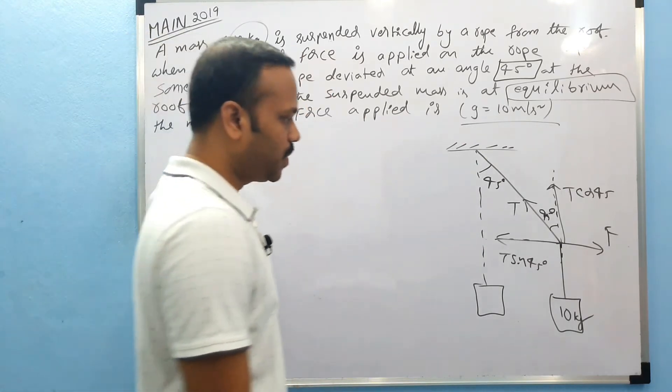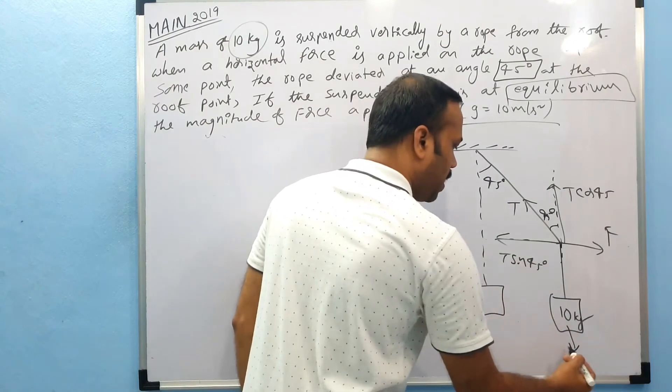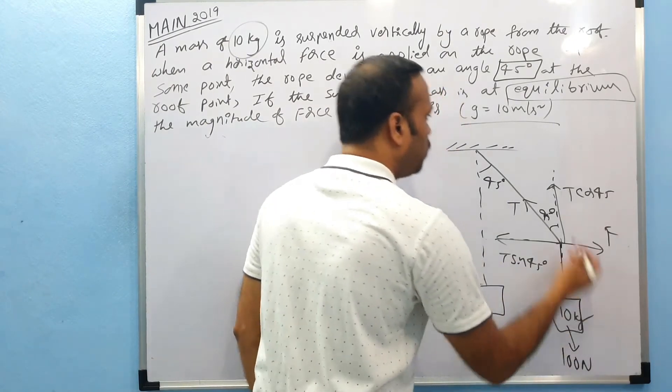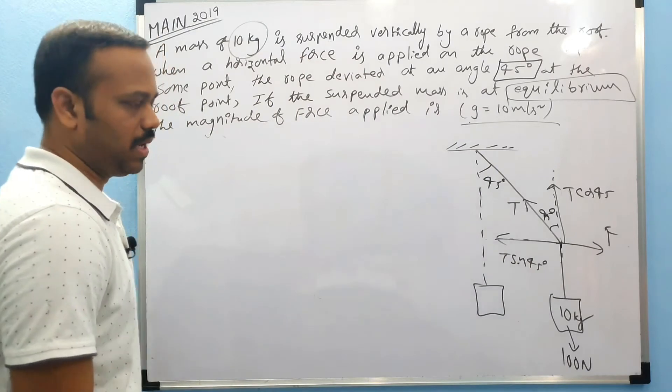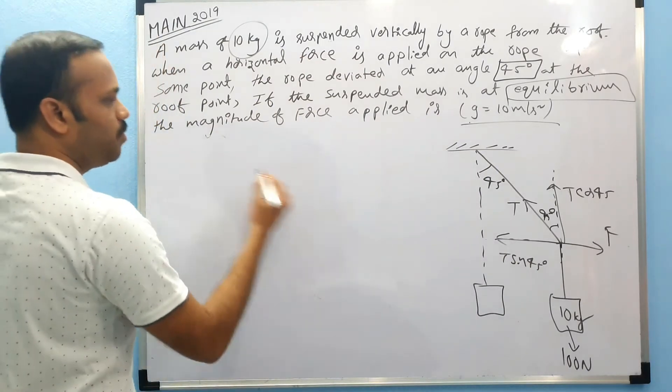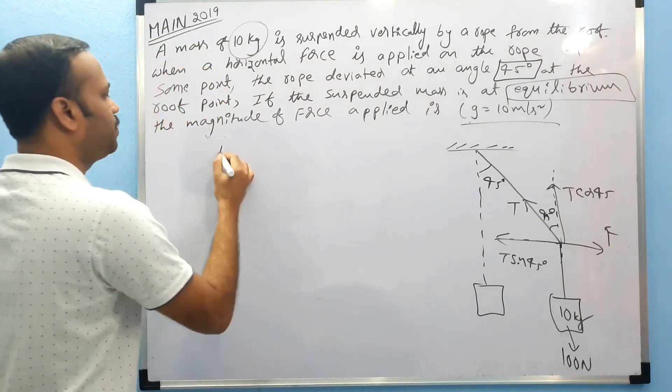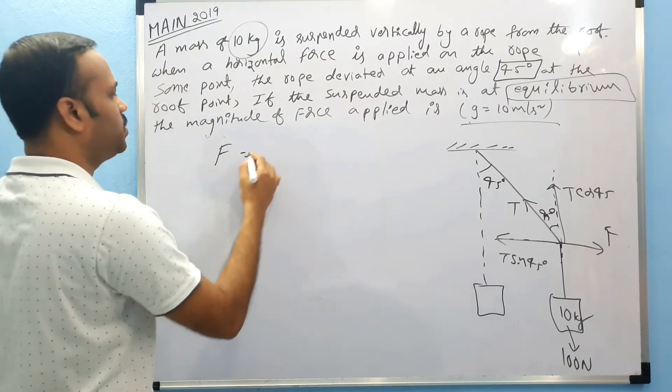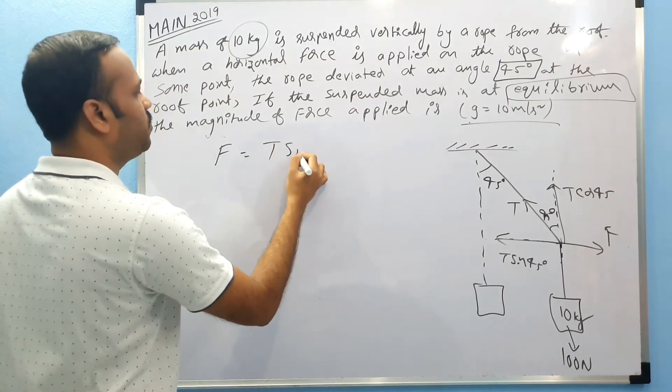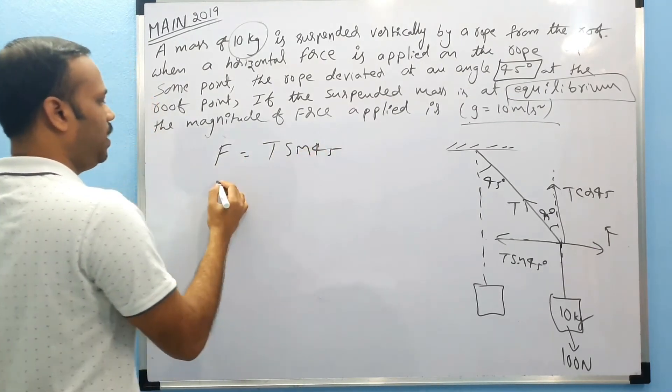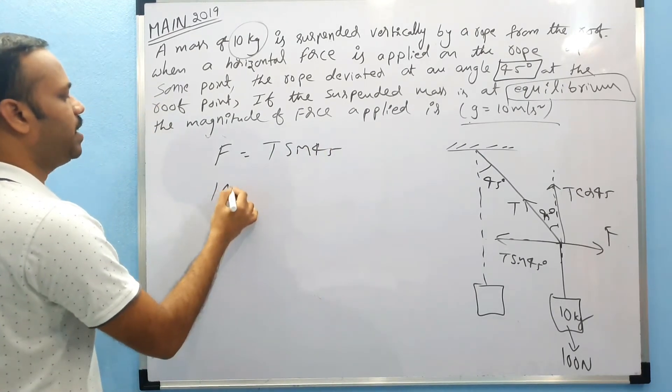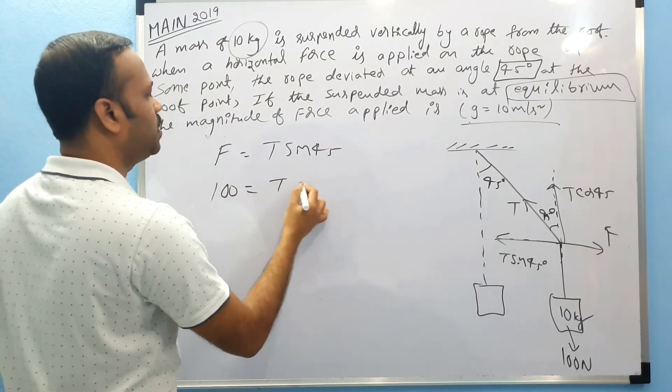What is downward force? 100 newtons, because they ask us to take g as 10 meters per second squared. If you balance right and left: right force F equals left force T sine 45. And downward force is 100, upward force is T cos 45.